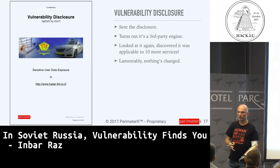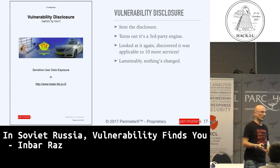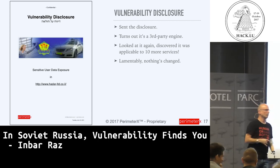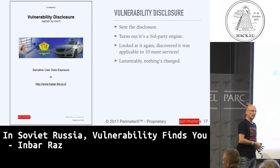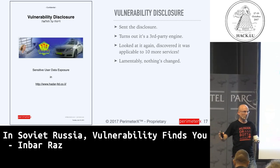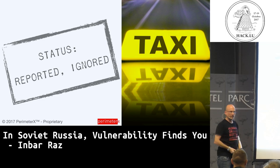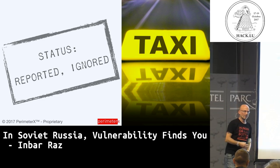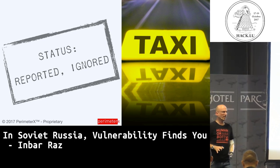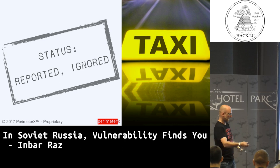We wrote the disclosure document and sent it to them. But it's a taxi service — they don't know the first thing about vulnerabilities. They didn't do anything; they didn't even answer. We gave them a call, and it turns out they don't actually run the service — it's a third party. When we looked further into the code, it's the same service being used by 10 different taxi services across the country. So basically you can milk out the entire database. We sent the disclosure, reported it, and they ignored it. It is still working.